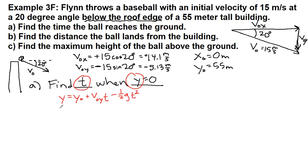We plug in numbers: zero equals 55 plus negative 5.13—without that negative sign, we have made a completely different problem. That is a huge physics error and it is not a small math error. That negative sign is absolutely key. When we clean this up, we get 55 minus 5.13 t minus 4.9 t squared.